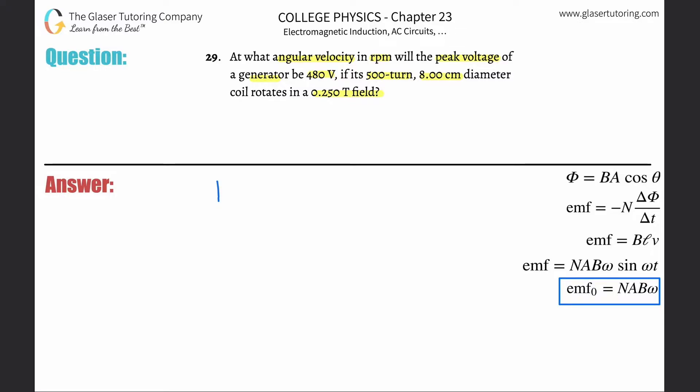So I'm just going to write it V sub-P. That's going to be equal to the number of turns of the coil of the generator multiplied by the area of that coil multiplied by the magnetic field that the coil is rotating under multiplied by the angular velocity.